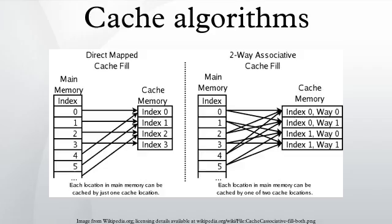This requires one bit per pair of cache lines, to indicate which of the two was the least recently used.